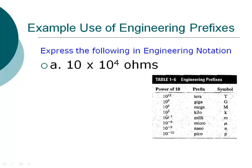Conversely, if we get smaller, we have 10 to the 0 in between, which is just unity. As we get smaller, we go 10 to the minus 3, which is milli, 10 to the minus 6, which is micro, and so on. When we have 10 to the 4th — a power that isn't a multiple of 3 as the exponent — we want to rearrange it so that we can get a multiple of 3 in there.